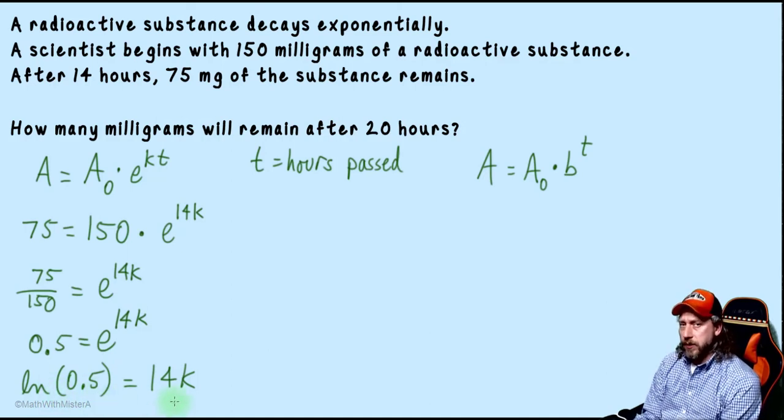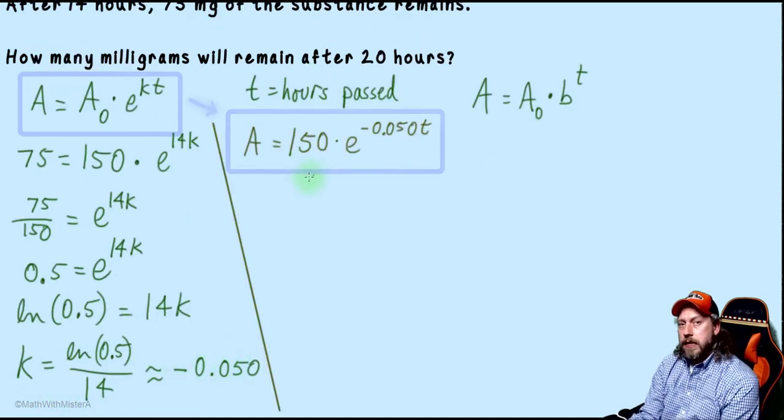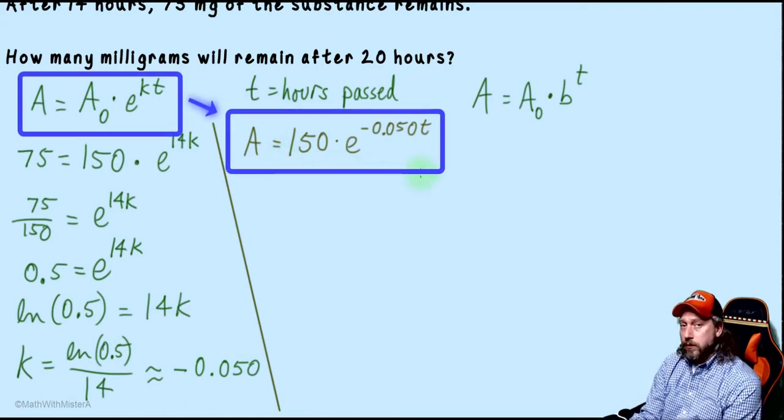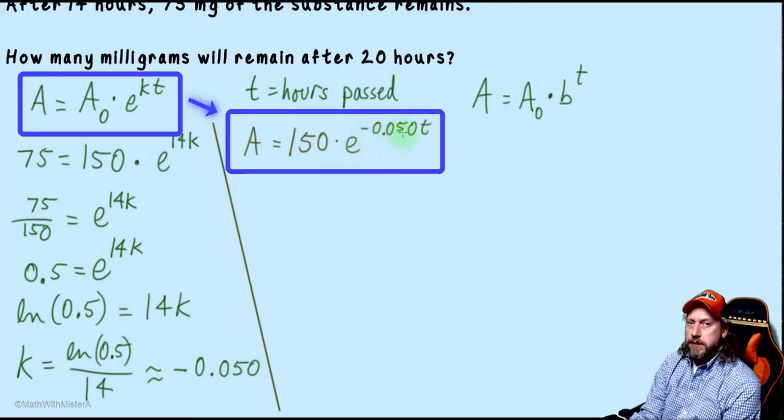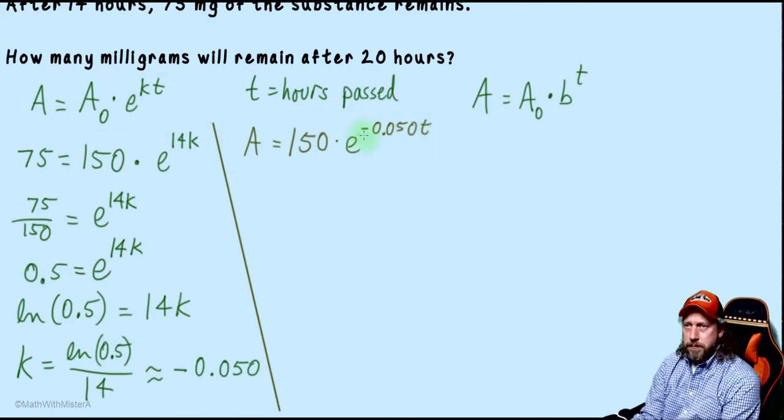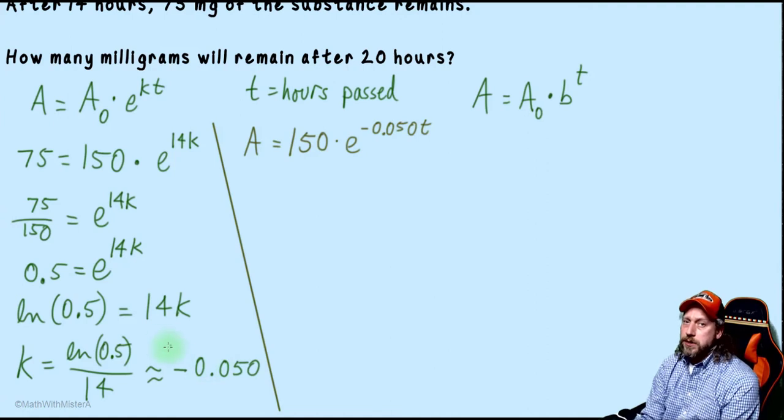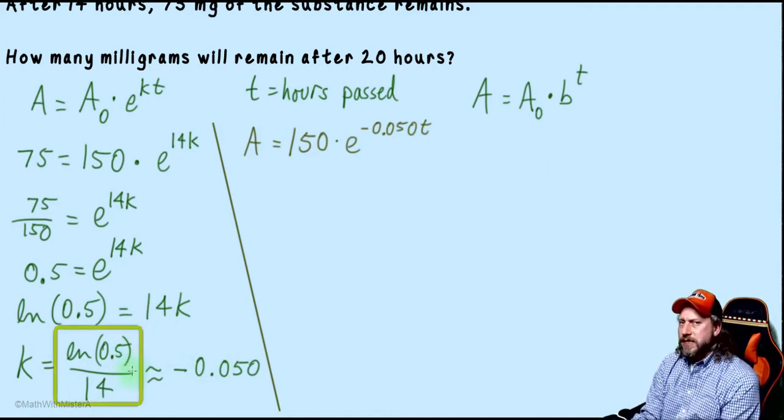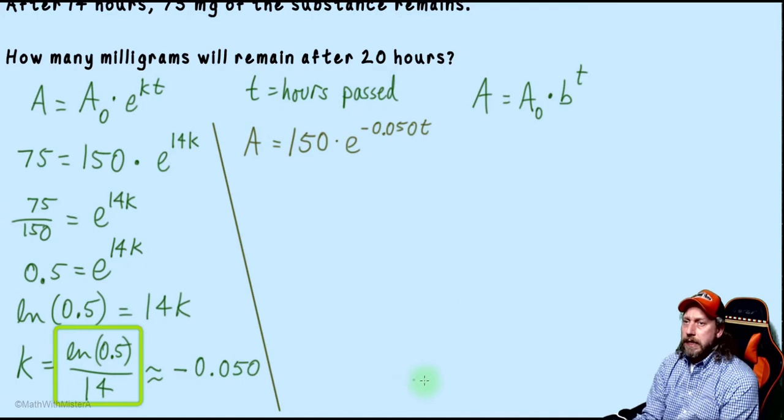Now that we have our value of k, we have a complete exponential model for this situation. An amount of the substance can be found by taking the original amount, 150 milligrams, multiplying by e to the power of negative 0.050t. Now I've written in the decimal approximation just to make the writing look a little cleaner, but when I actually do the calculations I'm going to try to use the original expression so we can stay as precise as possible until we get to the very last step, and then we'll round.